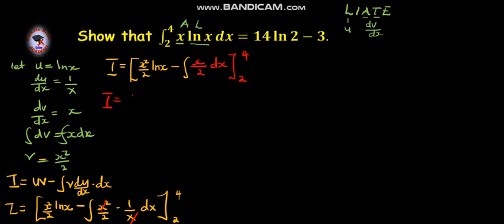So, I is equal to x squared over 2 ln x, minus x squared over 4 from 2 to 4.